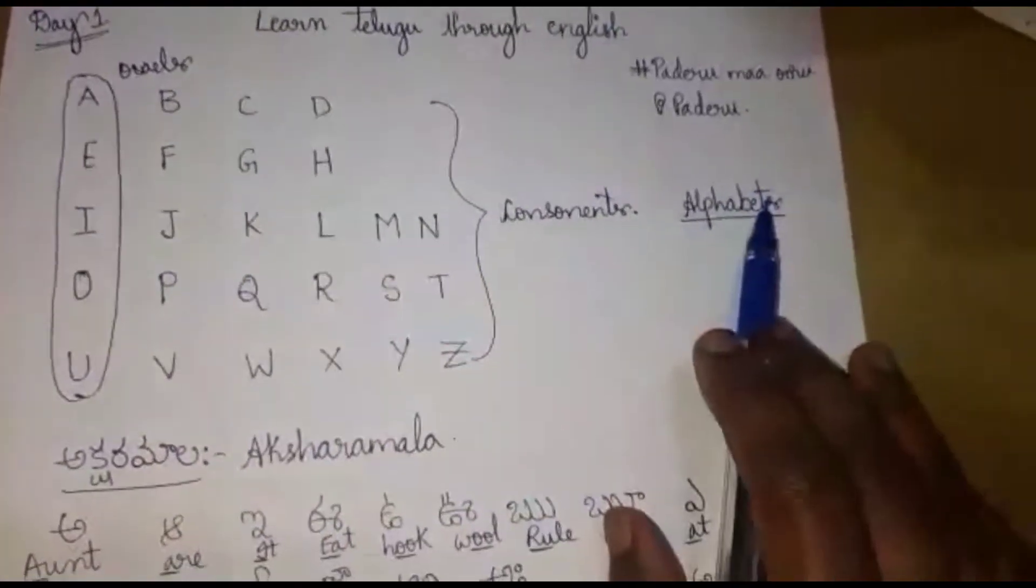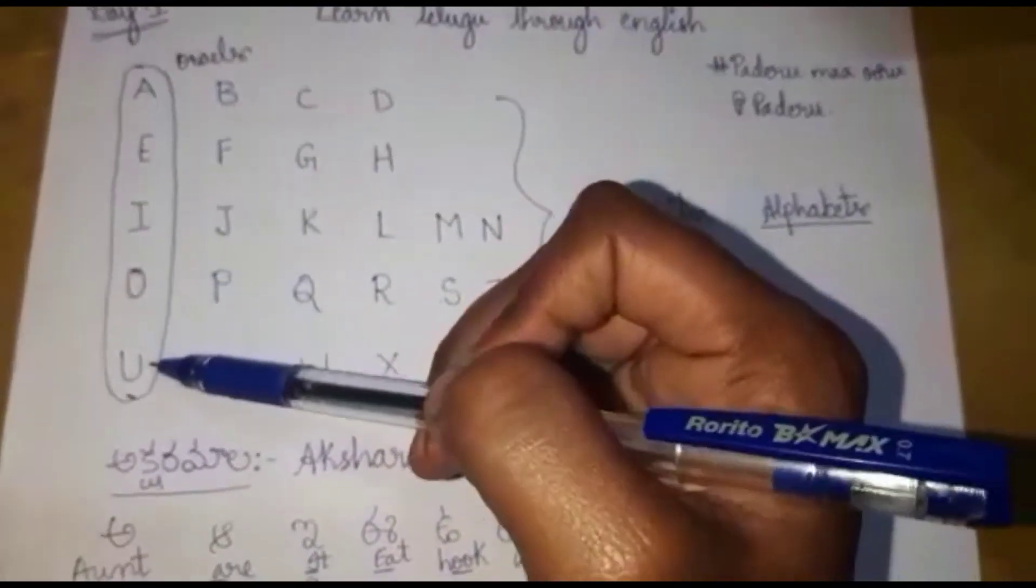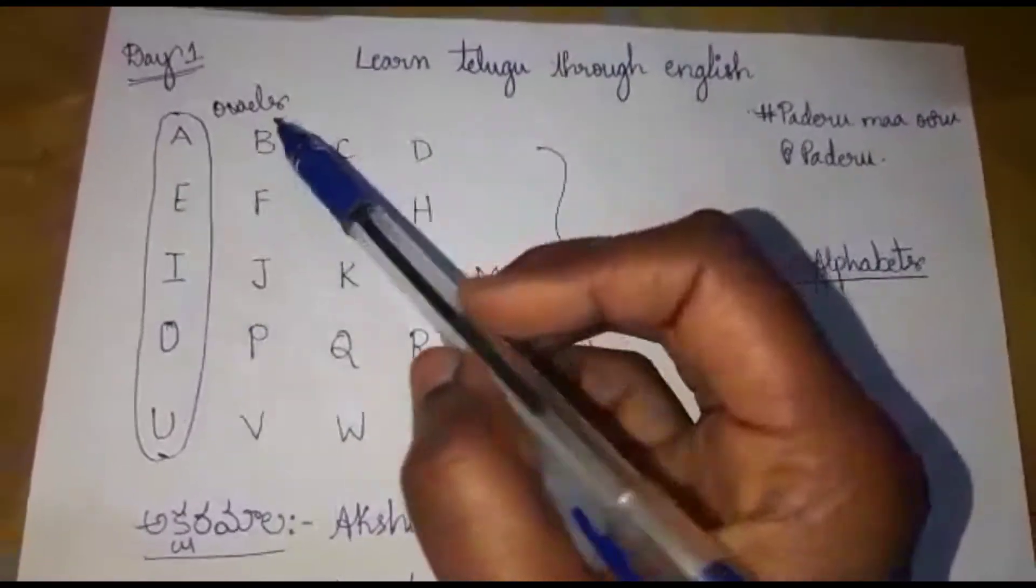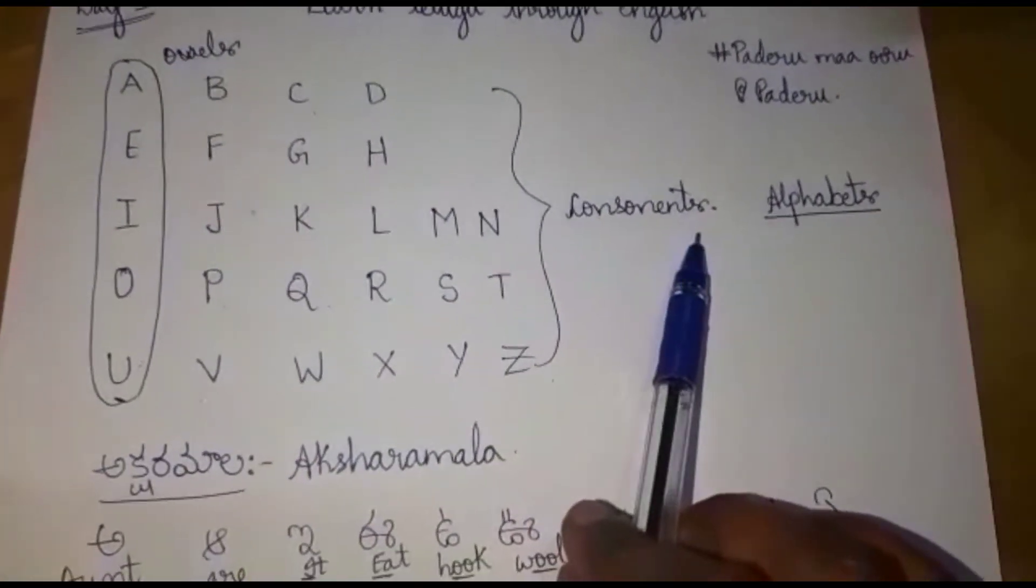These are the English alphabets. A, E, I, O, U are called as vowels. And the remaining letters are called as consonants.